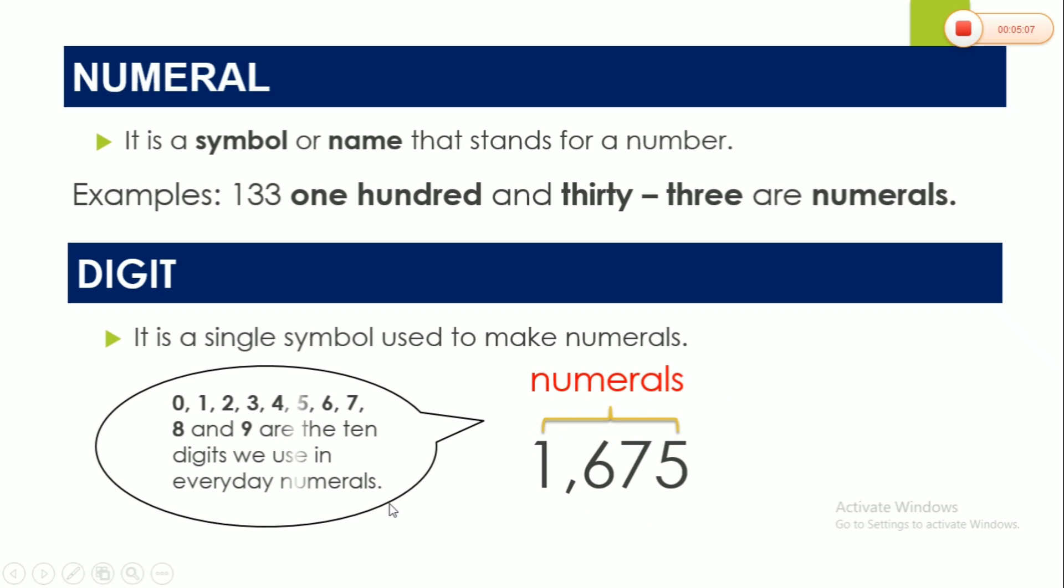And so when we say digits, there are 0, 1, 2, 3, 4, 5, 6, 7, 8, and 9. Yes, correct. These are only 10 digits that we commonly use to make numerals. And actually, there are 4 digits here. So we have 1, 2, 3, 4. There are 4 digits. So let's have an example. The numeral is 1,675. It is made of 4 digits: 1, 6, 7, and 5. Got it?